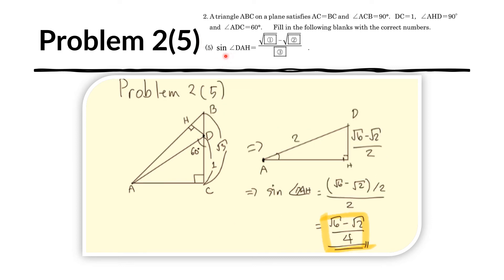Question 5: we need to find the sine of angle DAH. Looking at the triangle, angle DAH is the angle we want. We already know DH from the previous problem, and AD equals 2 from earlier problems. By definition, sine equals the opposite side divided by the hypotenuse. The opposite side is DH and the hypotenuse is AD equals 2, so sine of angle DAH equals (square root of 6 minus square root of 2) over 4.